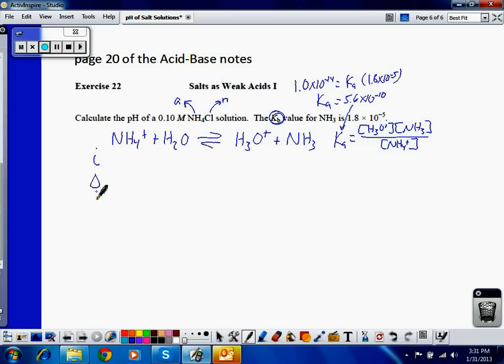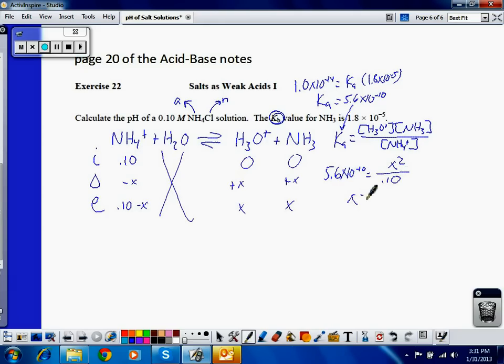My ICE table sets up like this. 0.1 to start, 0, 0, plus X, plus X, minus X, 0.10 minus X, X, X. Set up my K: 5.6 times 10 to the negative 10th equals X squared over 0.1.